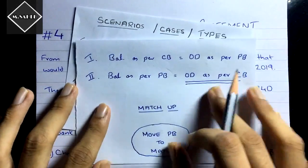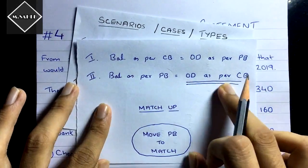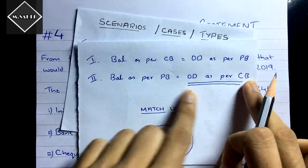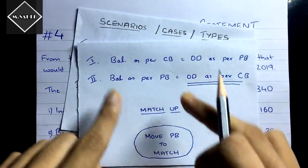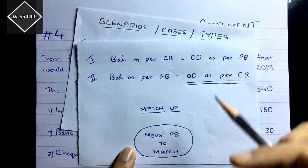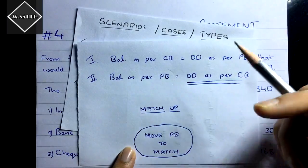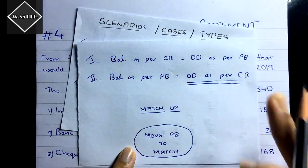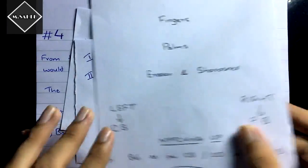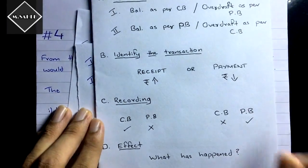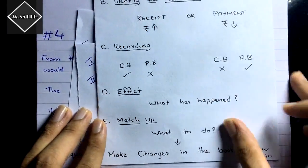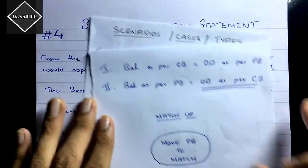We have the second scenario with overdraft as per cash book. So we assume it is balance as per passbook and then do the match-up with the passbook finger to make the changes. I recommend watching the previous three videos or the concept video to understand the full technique. Now let's solve the problem.